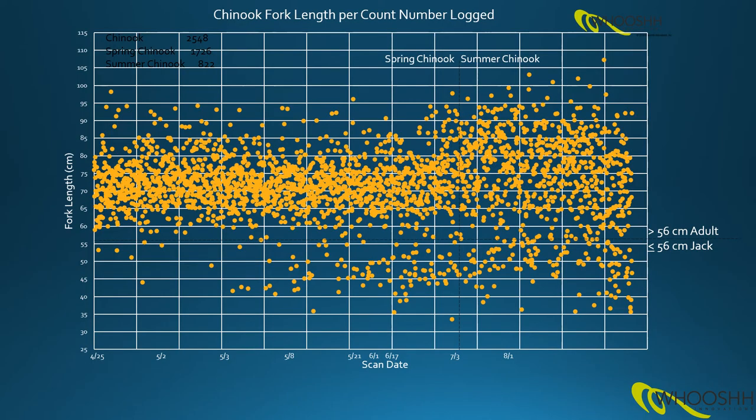Plotting the individual fork lengths for these Chinook over time we were able to see what we believe to be the transition between spring Chinook populations which are tightly clustered on the left of the plot to the summer populations around the beginning of July which show a lot more variation in fork length.